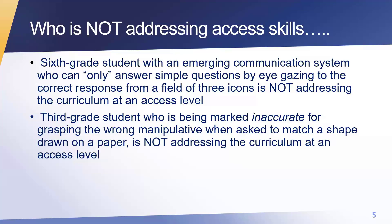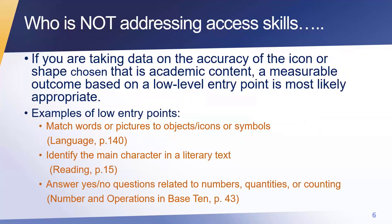Match two shapes made from different materials — that's an entry point. Now there is a geometry access point about grasping geometric shapes. But what makes this particular student right or wrong? If the answer is marked wrong because the student didn't grasp any geometric shape within the expected latency period, that would have been an access skill. So if you're taking data on the accuracy of the icon or shape chosen, that's academic content — a measurable outcome based on a low level entry point is probably appropriate.